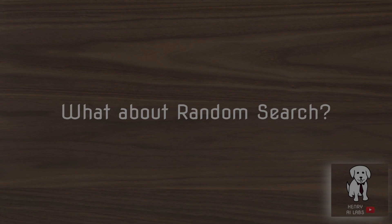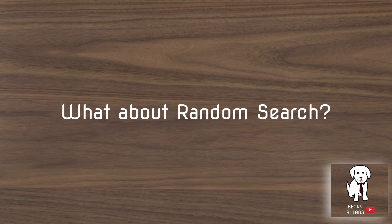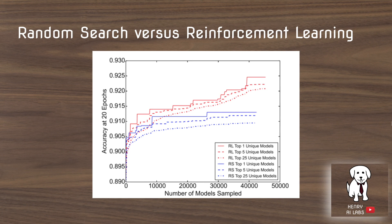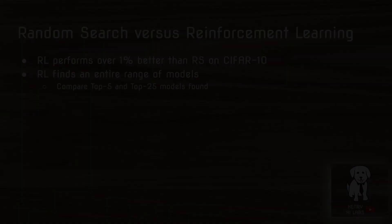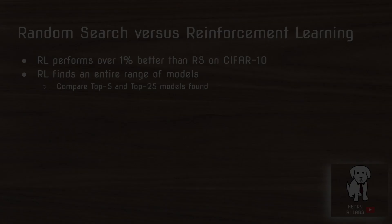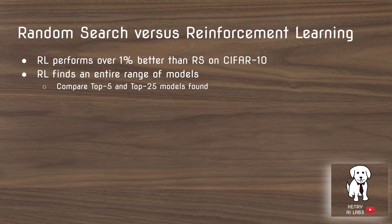The paper compares using reinforcement learning with the RNN controller against random search through the operations and hidden states. The results show that reinforcement learning achieves over a 1% improvement compared to random search on the top model. Furthermore, when comparing the top 5 and top 25 models found by each method, reinforcement learning heavily outperforms random search across the entire range of models.